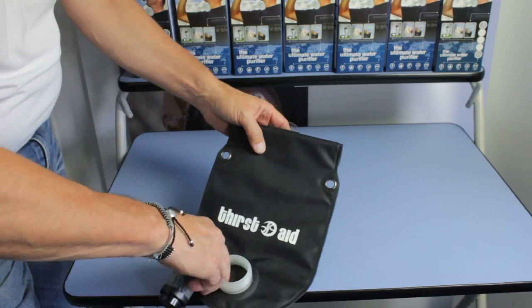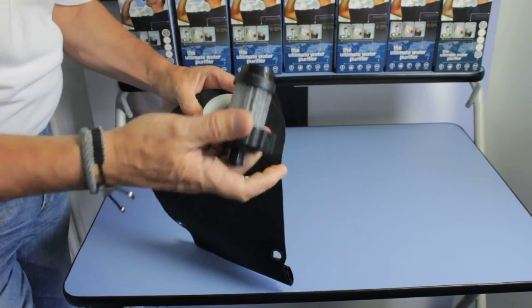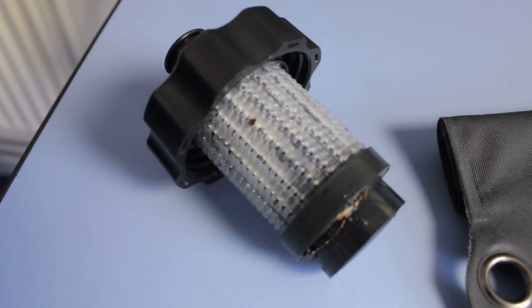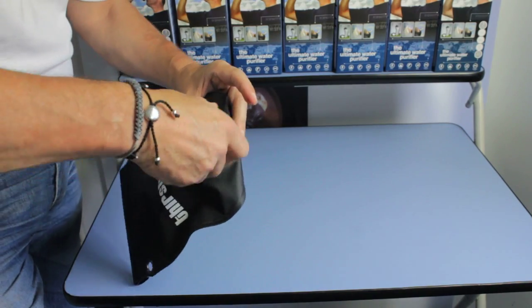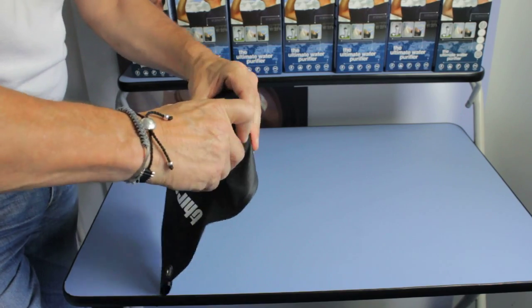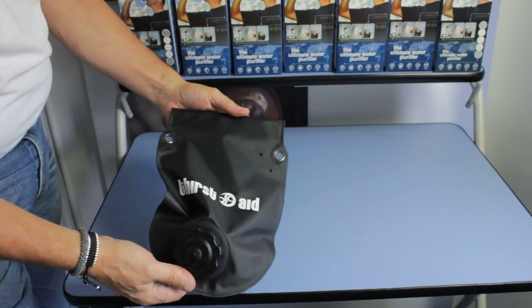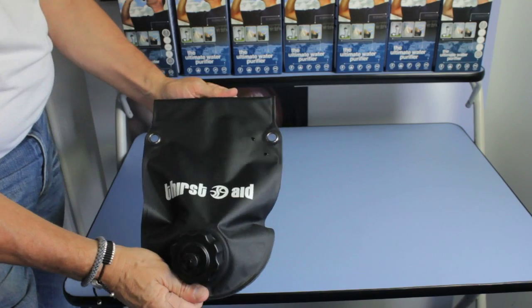The product uses our standard purification cap which again you've seen before on the adequate traveller. That just screws in there. Now you've got a 1.5 litre water purification bag.